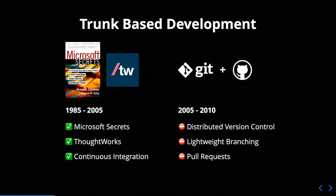Git introduced the idea of distributed version control, but also lightweight branching. Branching before Git came along was quite heavy — you needed to take an entire copy of all the code to create a branch, whereas Git was able to do that without taking an entire copy at once. And then GitHub came along shortly after and introduced the idea of pull requests.